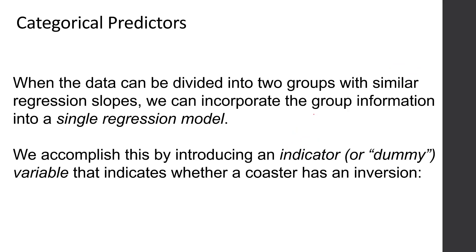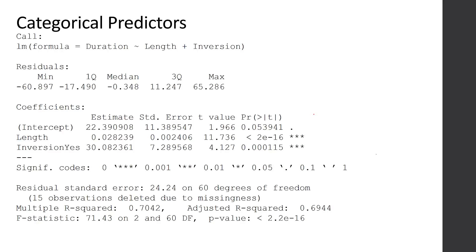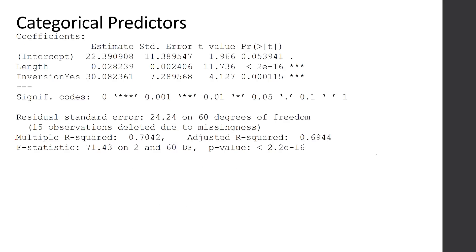We can actually incorporate this categorical variable inversions into a single model with our length as another predictor by introducing an indicator or dummy variable that indicates whether a coaster has an inversion. We're going to tell R to give it a 1 if the roller coaster has an inversion and a 0 otherwise. We did fit is duration tilde length plus inversion. We attached the data set so we don't need to put coaster's dollar sign in front of our names. We have our regression output here with our intercept, our coefficient for length, and our coefficient for inversions.